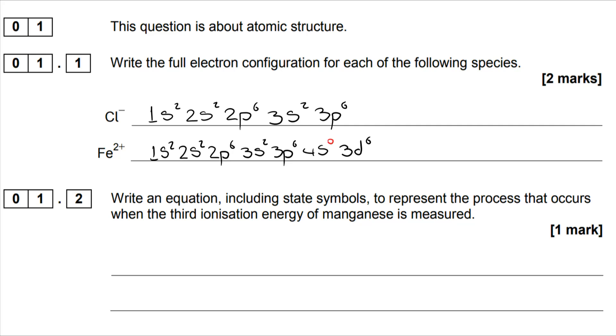And then we're asked to write an equation including state symbols to represent the process representing the third ionization energy of manganese. Now again you want to avoid the most common error, which would be to go from Mn all the way to Mn³⁺. Remember first ionization enthalpy or energy goes from Mn to Mn⁺. Second goes from plus to 2+, so the third is from 2+ to 3+. And in doing that it's lost an electron, so we have the + e⁻ on the right hand side.